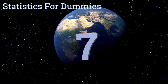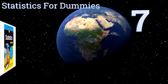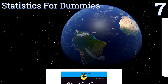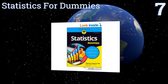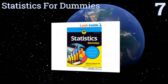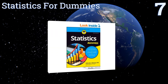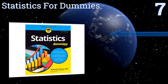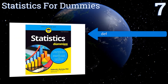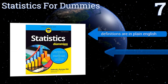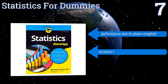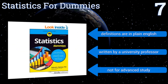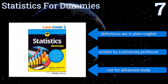Starting off our list at number seven, you can't get more basic than Statistics for Dummies, which offers one of the most informal introductions to the foundations of the subject of any text out there. It's a great gift for the family member or friend who's only recently taken an interest in the field. Its definitions are in plain English.